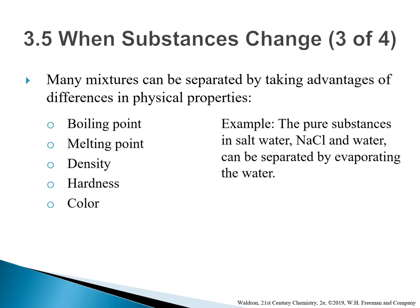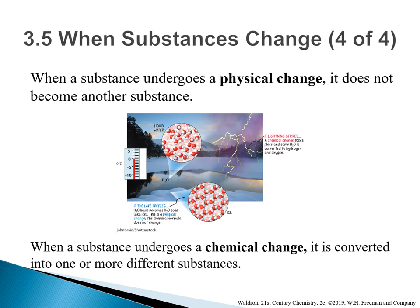Many mixtures can be separated by taking advantage of differences in their physical properties, such as boiling point, melting point, density, hardness of the material, and color. For example, to separate sodium chloride salt from sea water, you can simply evaporate out the water and be left with white crystal salt. When a substance undergoes a physical change, it does not become another substance. However, when a substance undergoes a chemical change, it is converted into one or more different substances. If a lake freezes, water liquid becomes water solid — ice — this is a physical change, and the chemical formula does not change. If lightning strikes, a chemical change takes place and some of the water molecules are converted to hydrogen and oxygen.